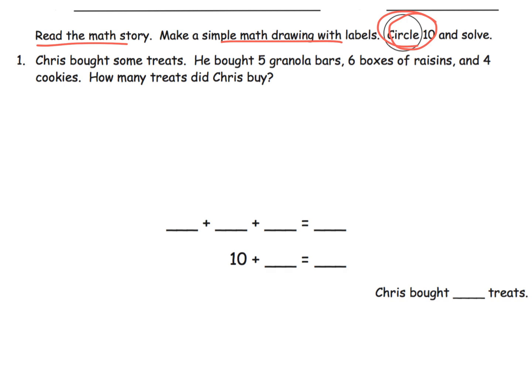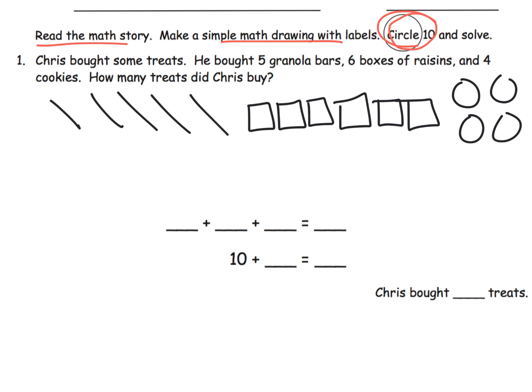So we have Chris, and he has bought some treats. He bought five granola bars, six boxes of raisins, and four cookies. Alright, so that's just one example of what we might be expecting students to do here. And then down here, we are going to write our equation. So we've got five plus six plus four. And what we want students to see is that six plus four is equal to ten.